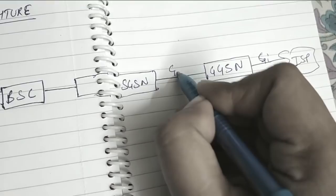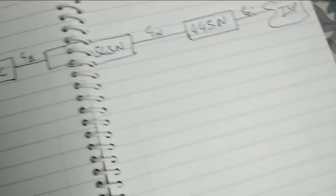Here SGI, GI Interface is there, N Interface is there, and GB Interface is between the BSC and SGSN.